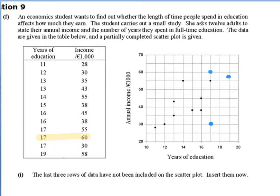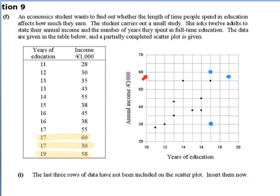Next, (17, 30): we go to 17 on the horizontal axis, then to 30 on the vertical axis and plot our point. Then (19, 58): we go to 19 on the horizontal axis, then to 58 on the vertical axis, go across and up, and plot our third point.